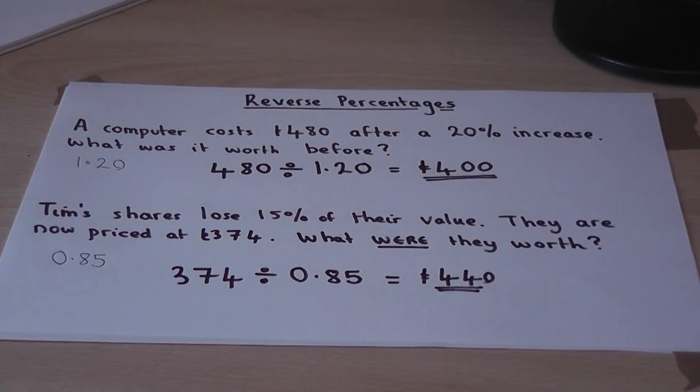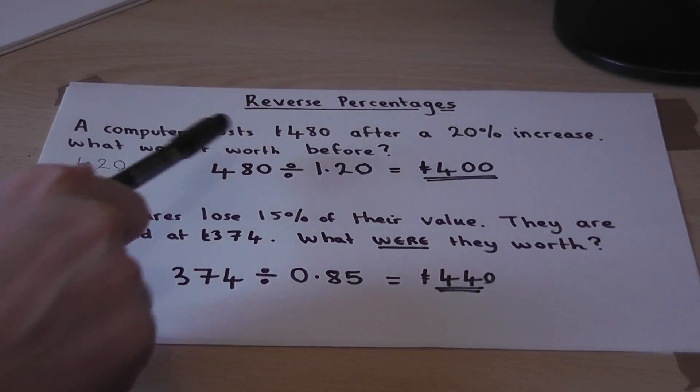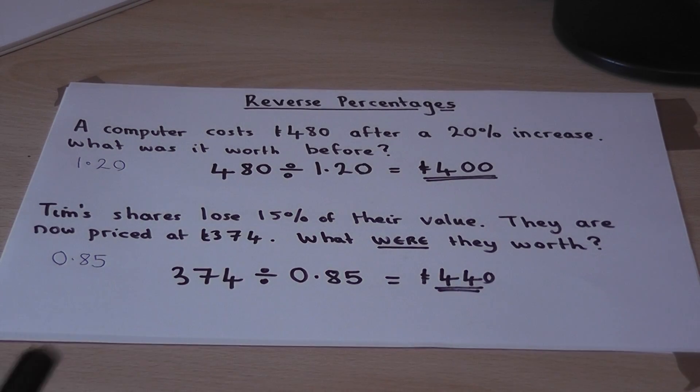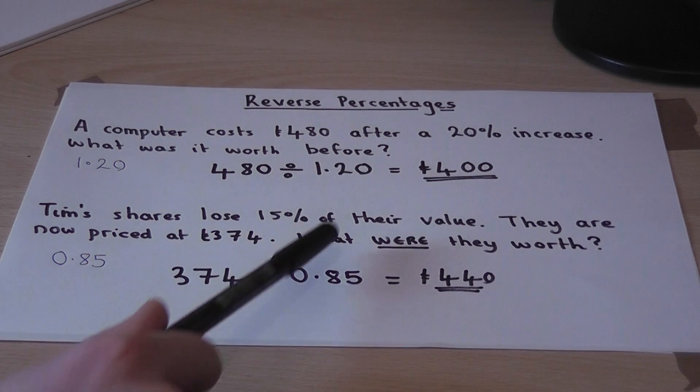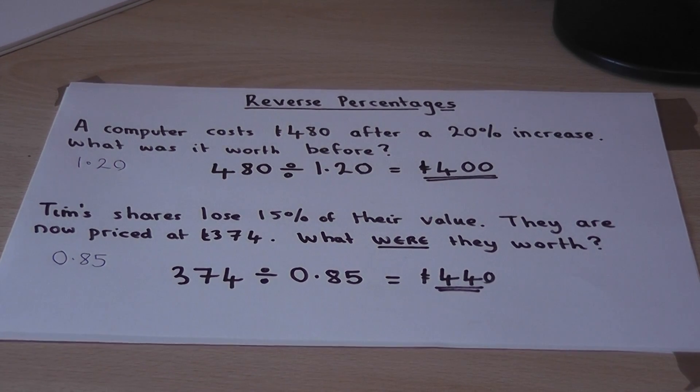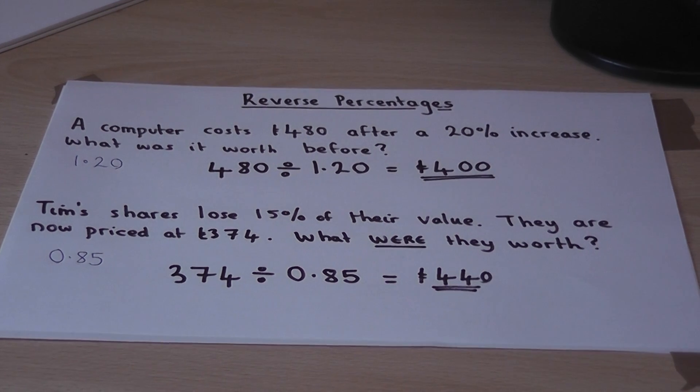So generally, we get the new value, divide by the percentage equivalent as a decimal, and this gives us the original value before the percentage change.